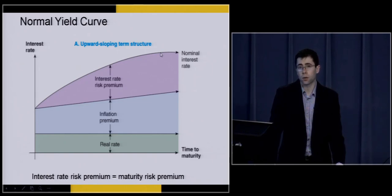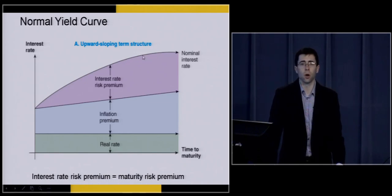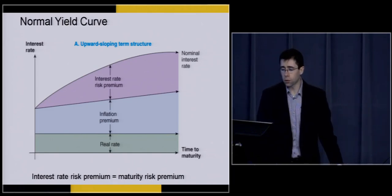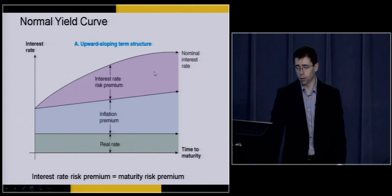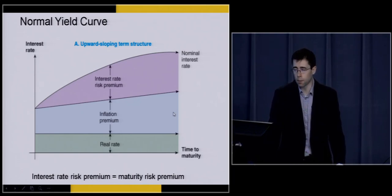Because U.S. Treasuries are typically seen as default risk-free, we don't include the default risk premium on the yield curve. We also typically don't include the liquidity risk premium, since U.S. Treasuries are seen as some of the most liquid assets in the entire economy. What we're left with is our maturity risk premium — also known as the interest rate risk premium — plus our inflation premium, and then the real interest rate, R-star.